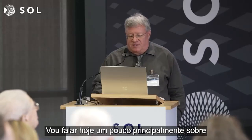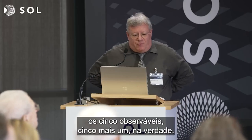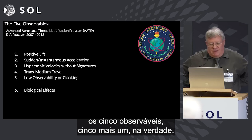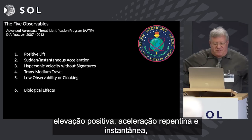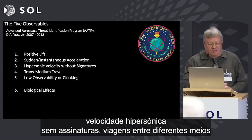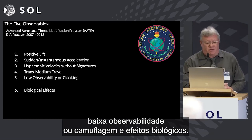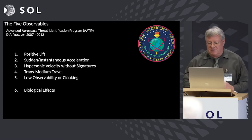I'm going to talk mostly about characteristics of UAPs related to physics. From the ATIP program, we have the five observables — five plus one really: positive lift, sudden and instantaneous acceleration, hypersonic velocity without signatures, transmedium travel, low observability or cloaking, and biological effects.